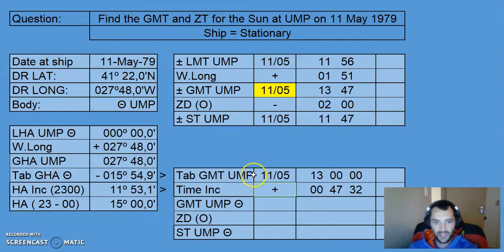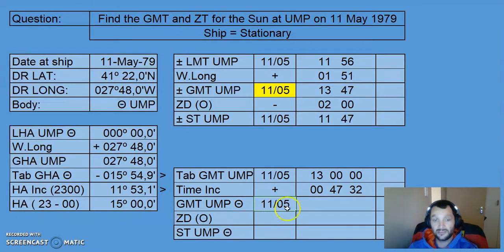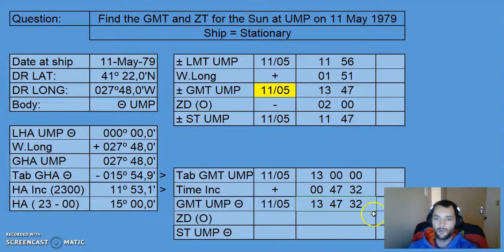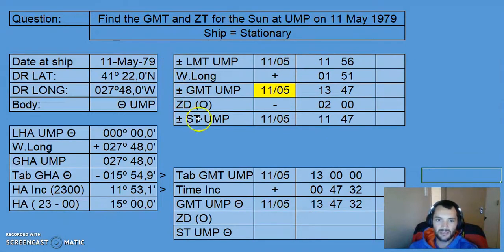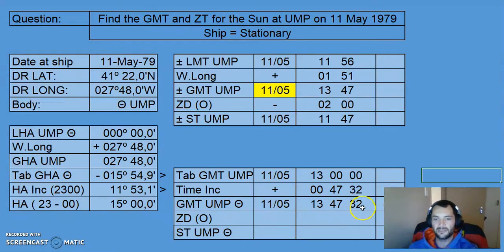That time increment is added to our tabulated GMT of 1300, and that gives us the actual GMT at Upper Meridian Passage — still on the same date — of 13:47:32. This is Zulu time, so we put the time zone in: it is an official time and we can call it time zone Zulu.